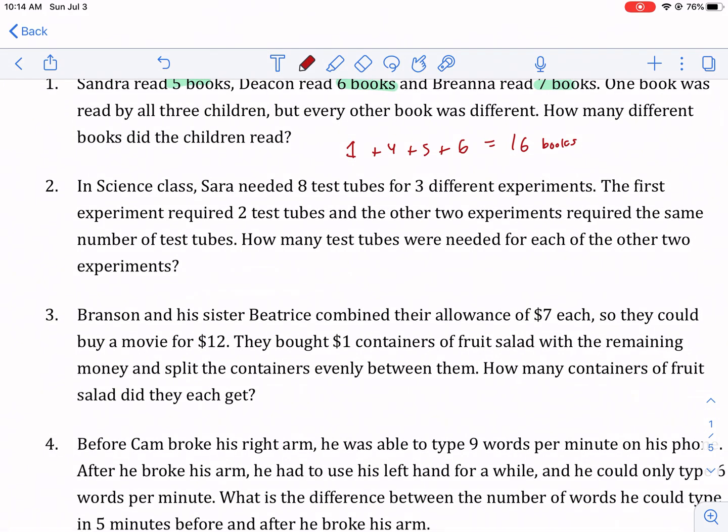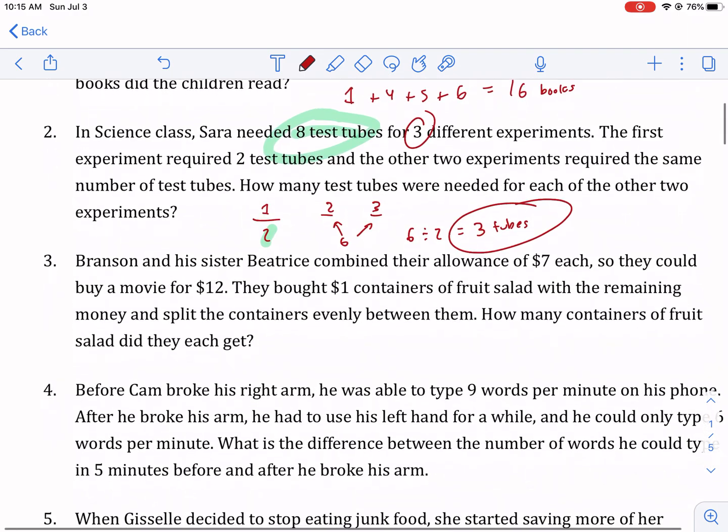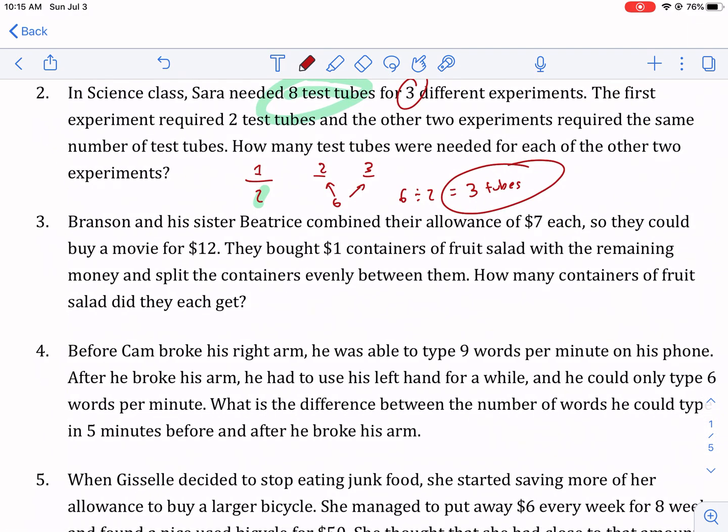Number two, science class. Sarah needs eight test tubes, so I'm just highlighting the important information for three different experiments. The first experiment required two test tubes. So this is the first experiment required two. And the other two experiments required the same number. So if this first one used two, we already know it takes eight. So we're left with six to be split up evenly between two and three. So essentially what we're doing here is six divided by those two different experiments. So that's going to be three tubes for each experiment, both the second and third one.